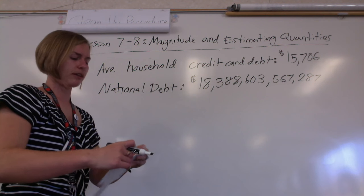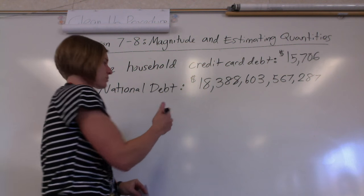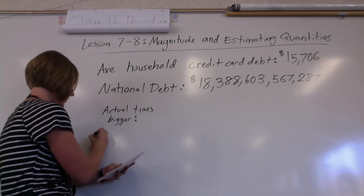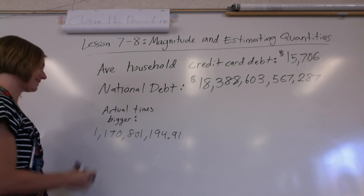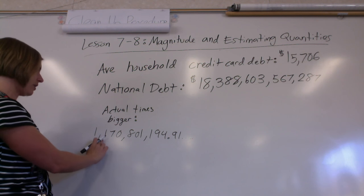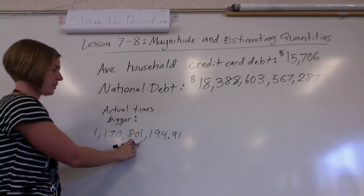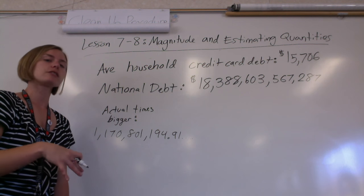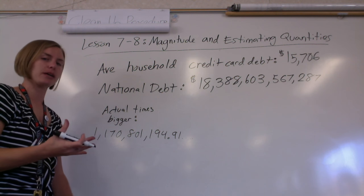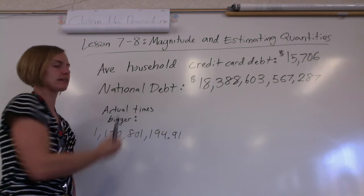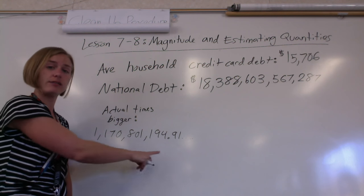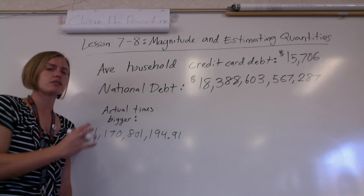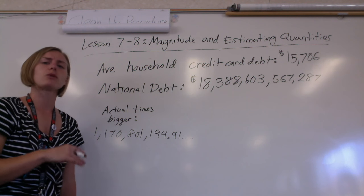If I wanted to say how many times bigger the national debt is than your household credit card debt, we could pull out our calculators and plug these in, but some calculators actually can't even hold that many numbers on the screen — you'll probably get an error message. Or you get a really nasty result that you don't even know what it means. The actual answer is about $1,170,801,194 times bigger — not just more, but times bigger. Thank goodness we know how to use powers of 10 to make these numbers more manageable.